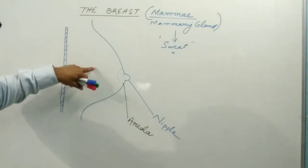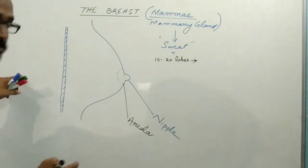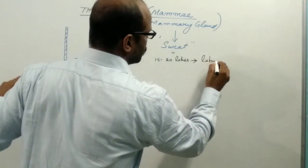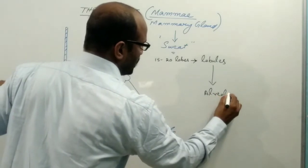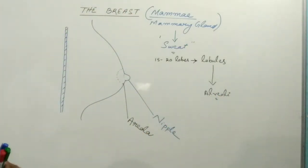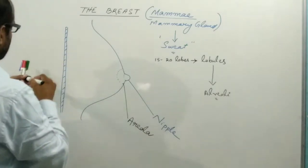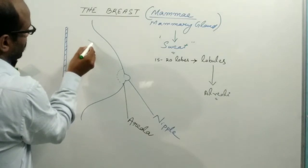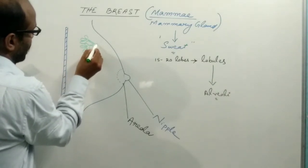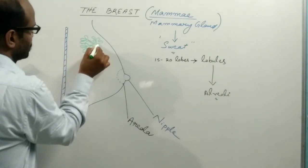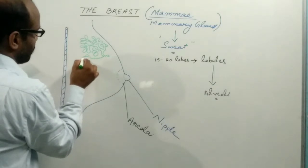The breast is composed of 15 to 20 lobes. Each lobe is composed of several lobules, and each lobule contains the milk-secreting alveoli. A cluster of alveoli is present, and such a cluster of alveoli looks like a rounded cluster of grapes.